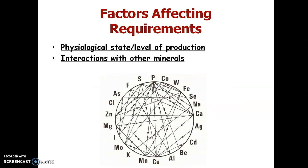Next, there are factors affecting the requirements of minerals. There are two factors. First is the physiological state or level of production, and second is the interaction with other minerals. In the physiological state or level of production, some minerals produced in our body affect the mineral requirement. In interactions with other minerals, different minerals continuously present in our body can interact with one another to form byproducts, affecting the mineral requirement or normal values of that mineral in our body.